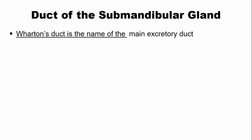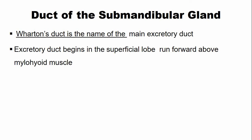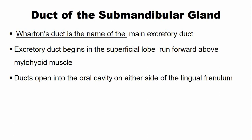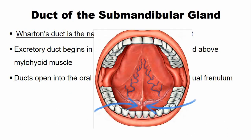The main excretory duct of the submandibular gland is also known as Wharton's duct. This duct starts in the superficial lobe and runs forward above the mylohyoid muscle. In the oral cavity, it opens on either side of the lingual frenulum. In the picture, you can see the lingual frenulum, and on either side of it there are two openings indicating the openings of the excretory ducts of the submandibular gland on each side.